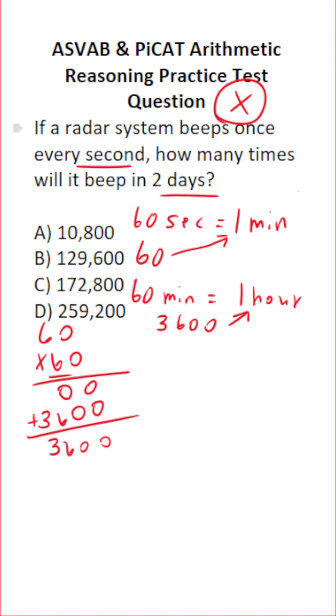All right. So let's work backwards here. You have to know that there are 24 hours in one day. So in two days, there are 24 times two hours, or 48 hours.